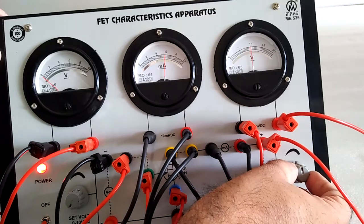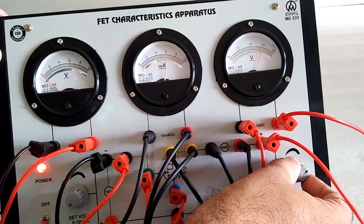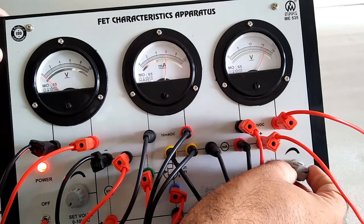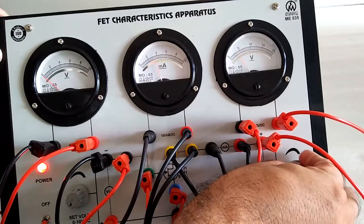Now you can see clearly current is stable, stopped, and voltage of VDS is increased. This is the one set of reading.